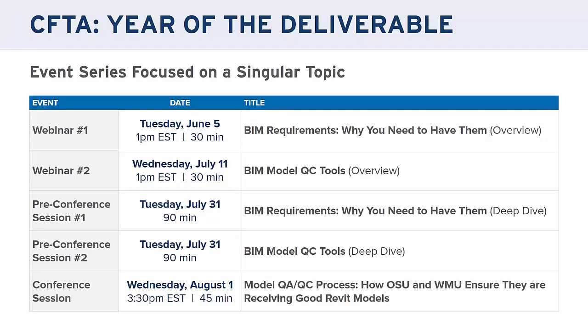Today is the first installment in that series, called 'BIM Deliverables: Why You Need to Have Them.' There are five primary components to the Year of the Deliverable series. The second webcast on July 11th will cover BIM model QC tools. Then at the annual CFDA conference on July 31st in Columbus, Ohio, there will be two pre-conference sessions, followed by a conference session on the model QAQC process, featuring partners Ohio State University and Western Michigan University.